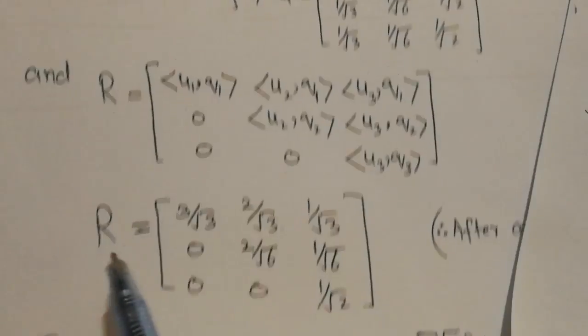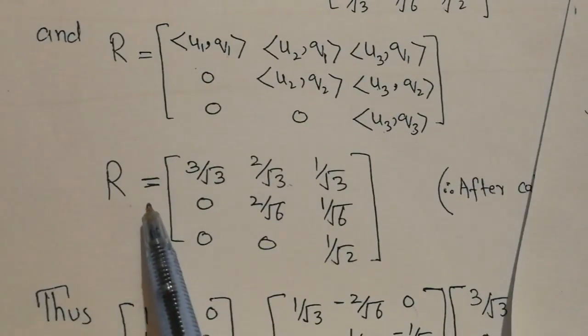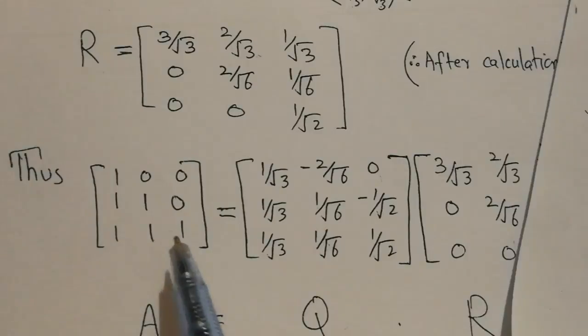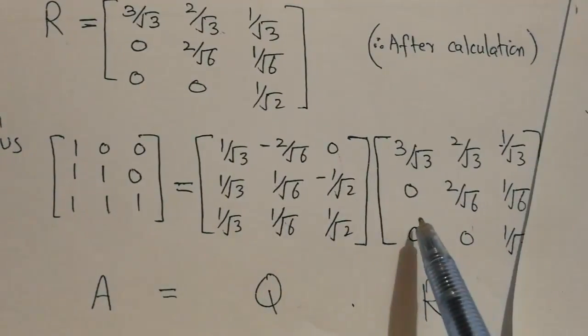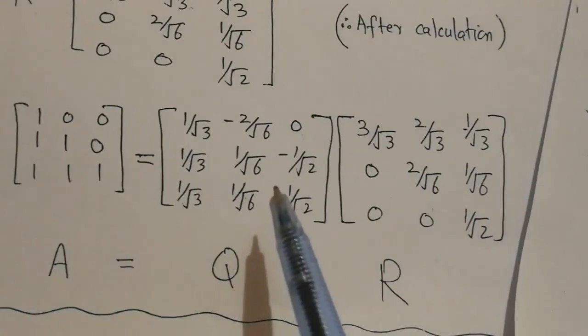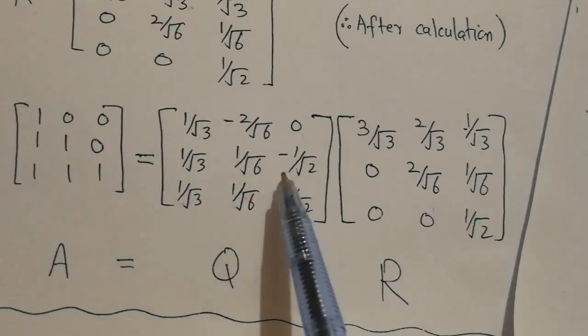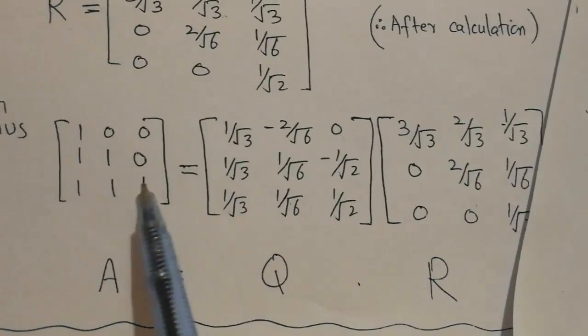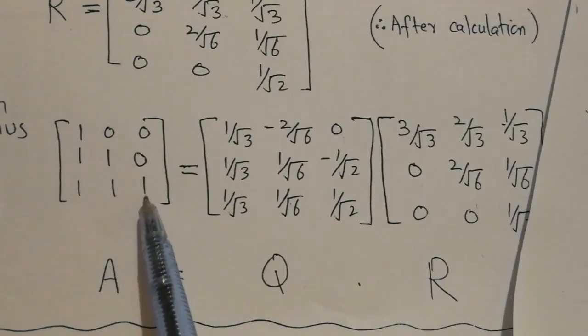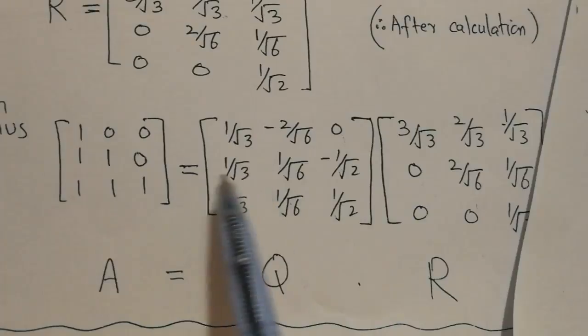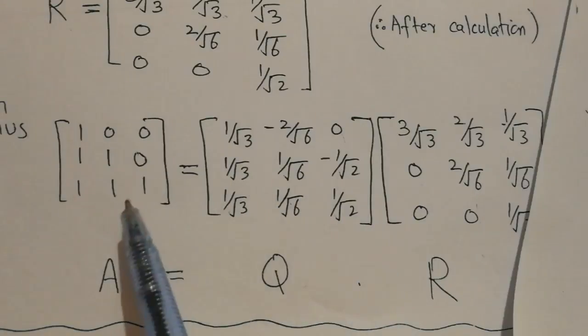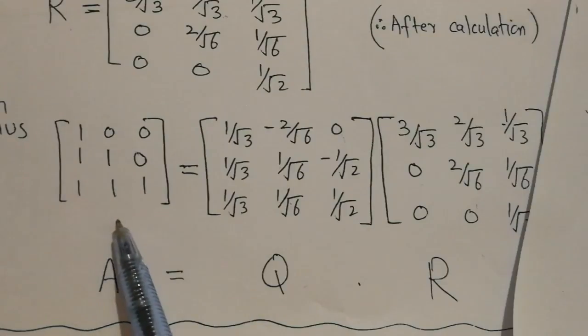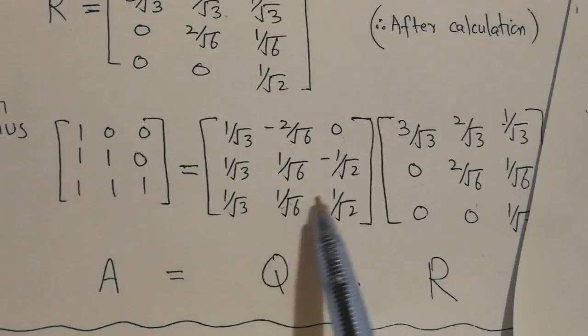Finally, we write A = QR. If you want to verify, multiply these two matrices and you will get matrix A. This process is called QR factorization, and we have decomposed matrix A into Q and R.